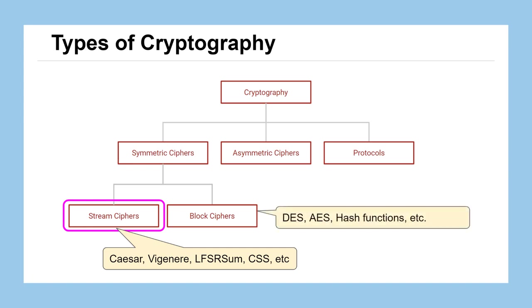Block ciphers incorporate working with whole collections of information, not just a single character at a time. They're used in more cutting-edge, modern encryption techniques such as DES and AES. They're also used in hash functions, which are used with cryptocurrency, and a lot of other applications.